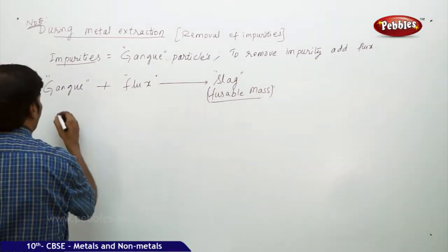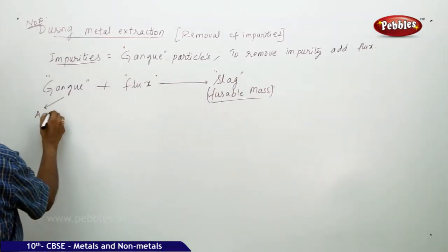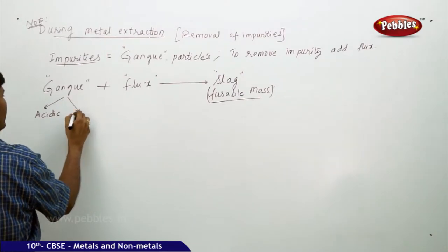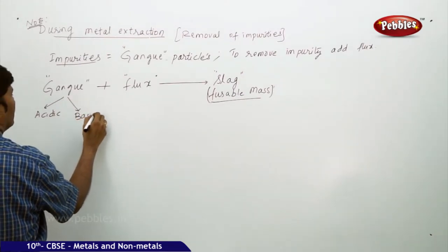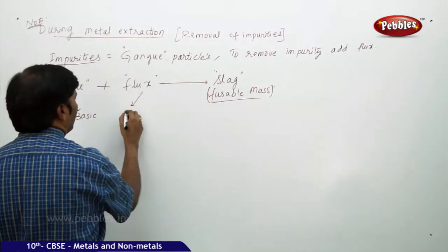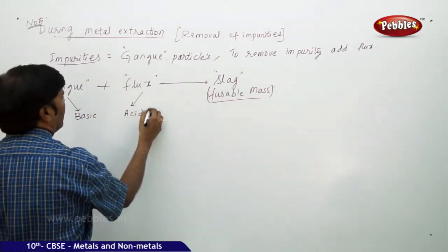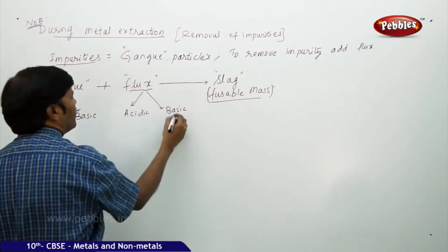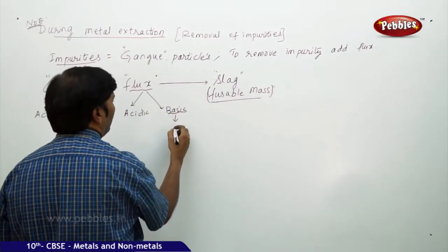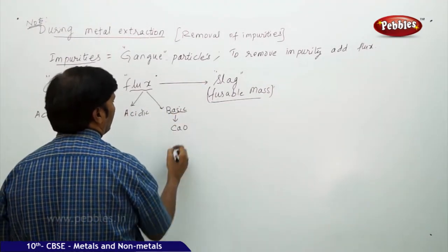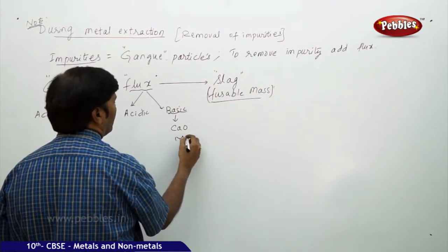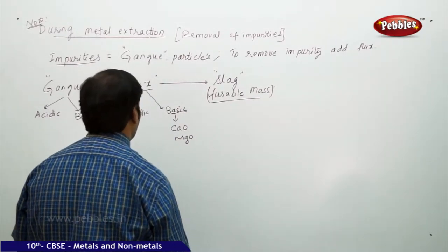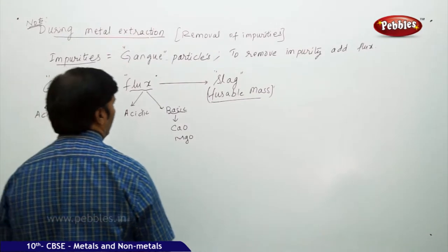What is happening here is, suppose this gang can be acidic and gang can be basic. Again, flux is acidic and flux can be basic. If it is flux, if it is basic, you can take all metal oxides like calcium oxide, you can take magnesium oxide, you can take the examples of the flux.